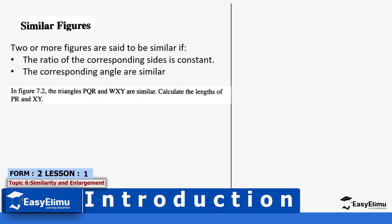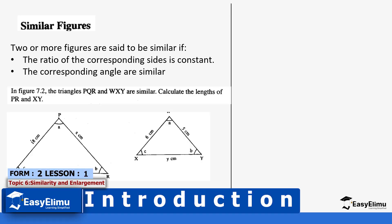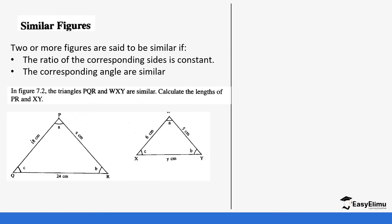For example, if you look at this example of these two triangles, first of all we want to show that side QP is the same as XW. So let's show that using the first property.